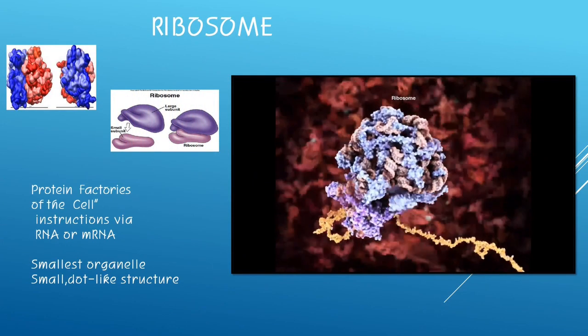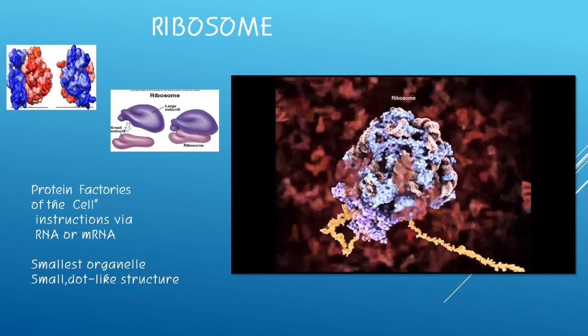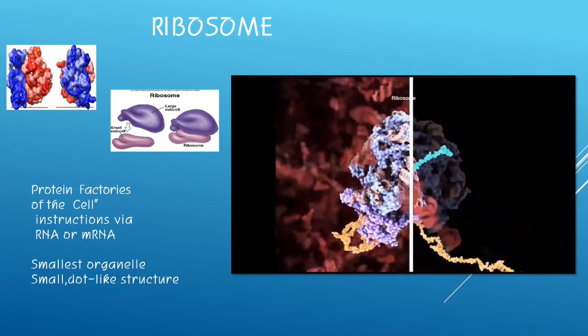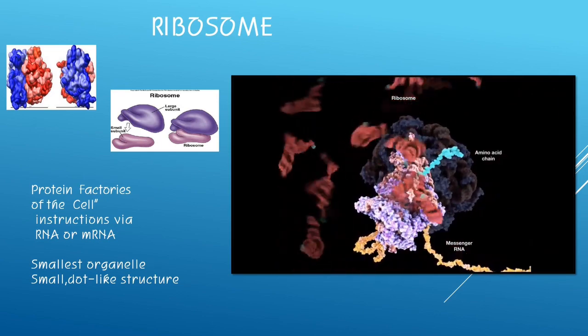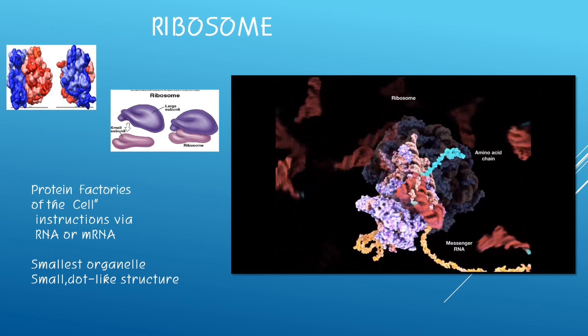Ribosomes. It is referred to as the protein factories of the cell. It receives instruction via RNA or mRNA. This is referred to as the smallest organelle, a small dot-like structure.